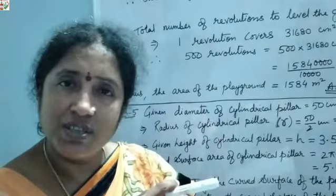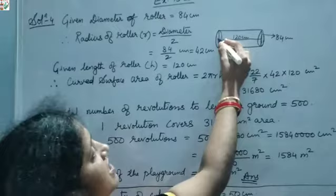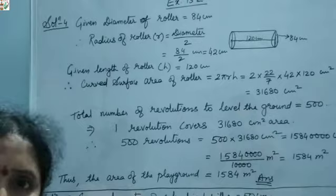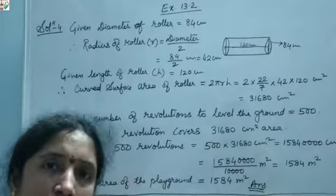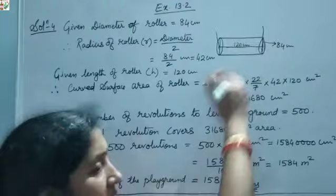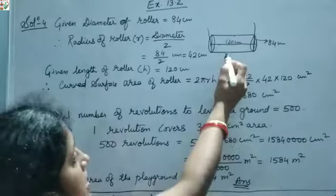Because the roller shape is like a cylinder. The top and bottom sides are not being rolled on the road or playground — only the curved surface area is being rolled. The device is attached to the sides of the roller machine, so only the curved part contacts the playground surface.